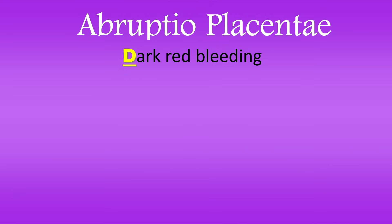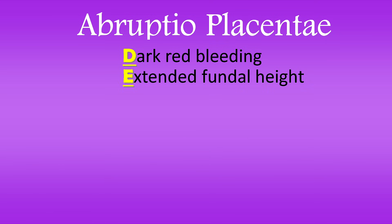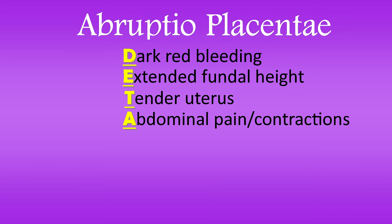For Abruptio Placentae using DETACH: D is for dark red bleeding — it can be concealed where the blood is not readily visible, so by the time it reaches the vaginal area it will be dark in color. E is for extended fundal height, from that concealed bleeding causing the uterus to increase in height. T is for tender uterus. A is for abdominal pain and contractions. C is for concealed bleeding.